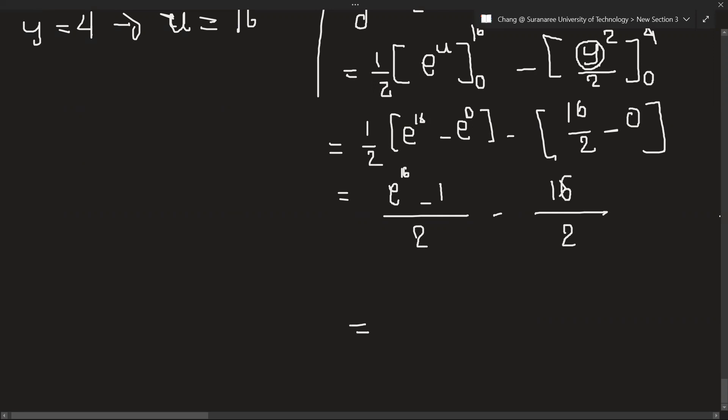So let's solve this one. We can take the common denominator, which is 2. So here will be 1/2 times (e^16 minus 1 minus 16), which equals 1/2 times (e^16 minus 17). So this is the answer.